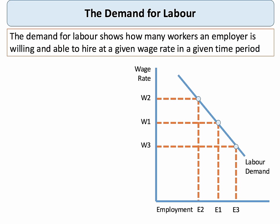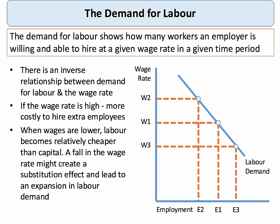Our labour demand curve is normally downward sloping, so at lower wages more people are employed and at higher wages fewer people are employed. We therefore assume there's an inverse relationship between the demand for labour and the prevailing wage rate. For example, if the wage rate is very high, it's probably costly to hire extra workers — the marginal cost of taking on an extra worker could be pretty expensive.